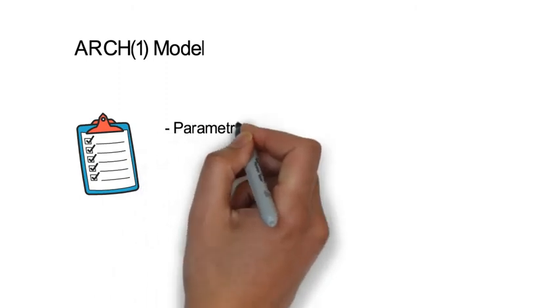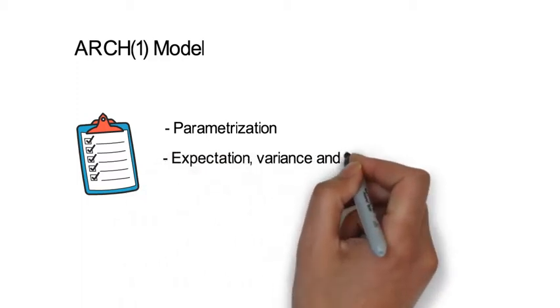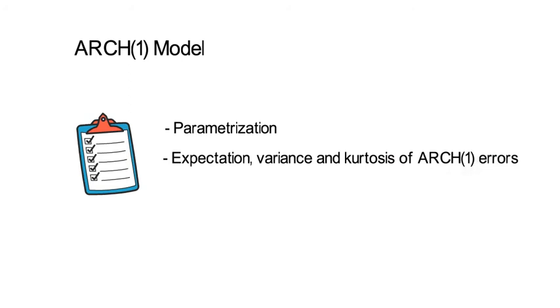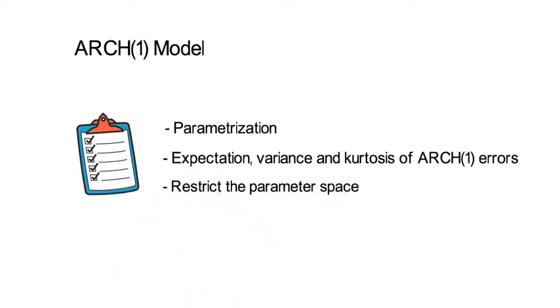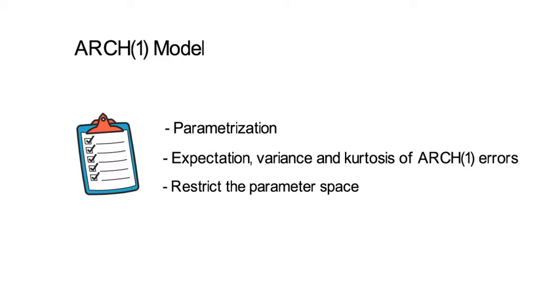First, how does the parametrization of an ARCH1 look like? Second, I want to derive the expectation, variance and kurtosis of ARCH1 errors. And third, I want you to see that for capturing fat tails in returns you will have to restrict the parameter space, which can limit the usefulness of more complex ARCH-GARCH models.